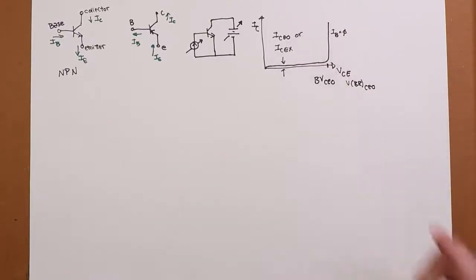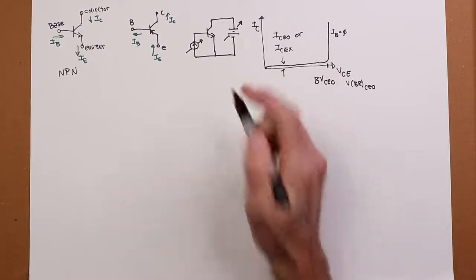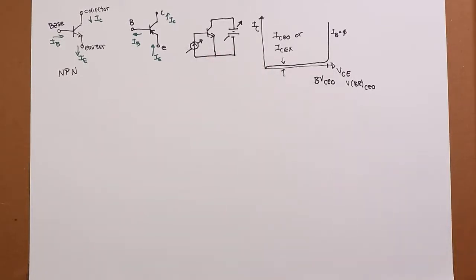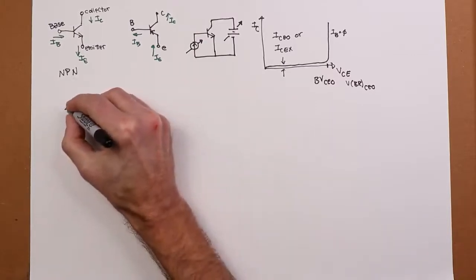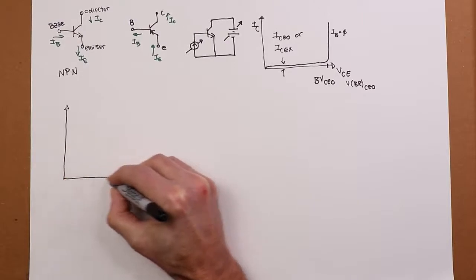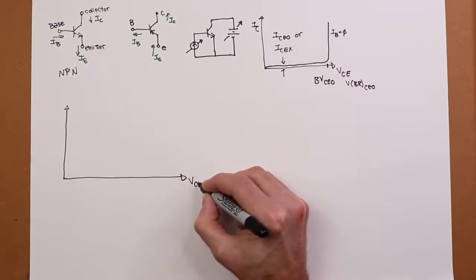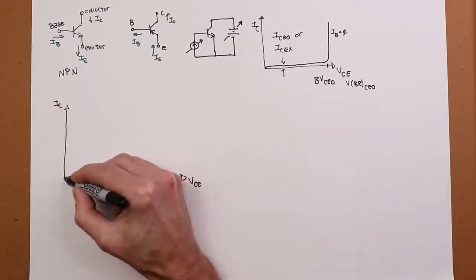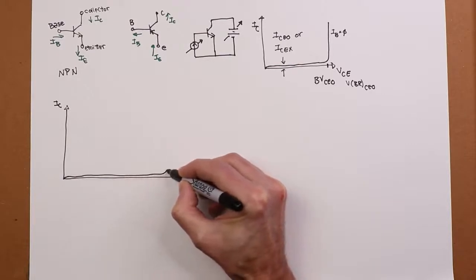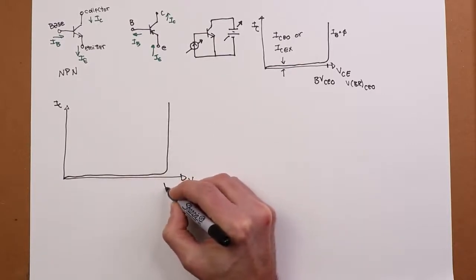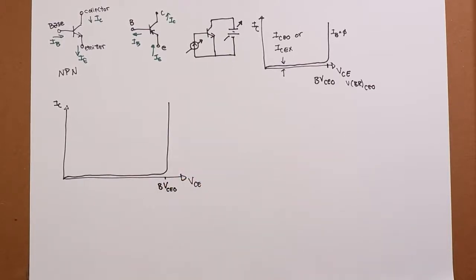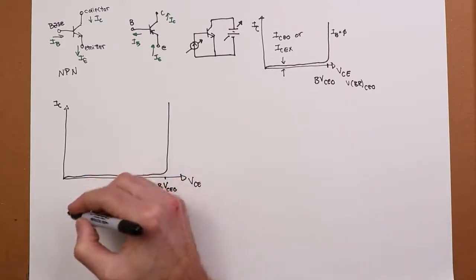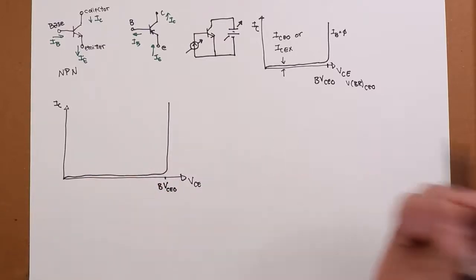Okay, now that's what we get for the zero value. What happens if we start cranking around with the base current source over here? Something very cool happens. Again, here's my collector emitter voltage and my collector current. So we have this initial one, which I'm just going to copy down here. There's our breakdown.